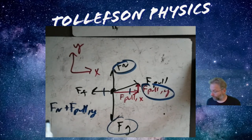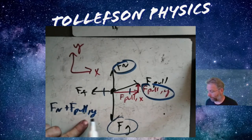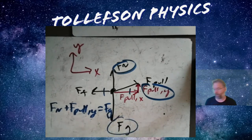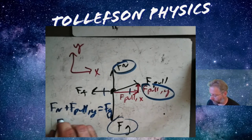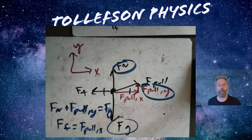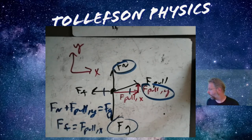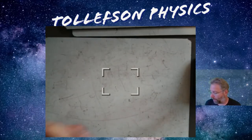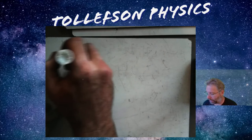I can write that mathematically: the normal force plus the force pull in the y direction equals the force due to gravity - my two up arrows equal my down arrow. For the x direction: my left arrow equals my right arrow. Eventually we'll be putting numbers to this, so that's why it's important to be able to do this.